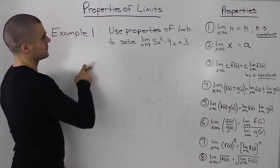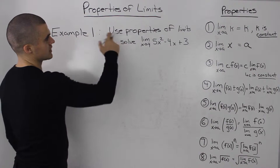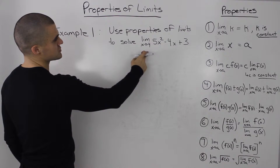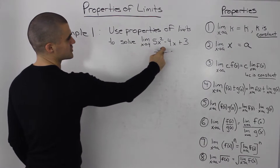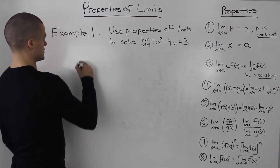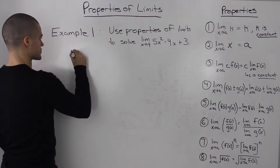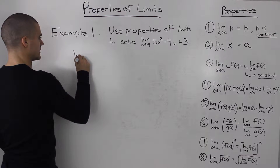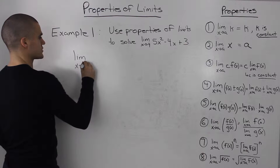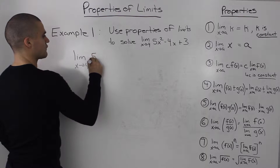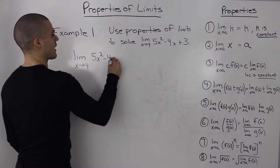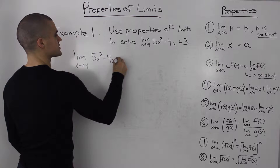Our first example for properties of limits: use the properties of limits to solve the limit as x goes to 4 of 5x squared minus 4x plus 3. The first thing we want to do is rewrite the limit as x approaches 4 of 5x squared minus 4x plus 3.